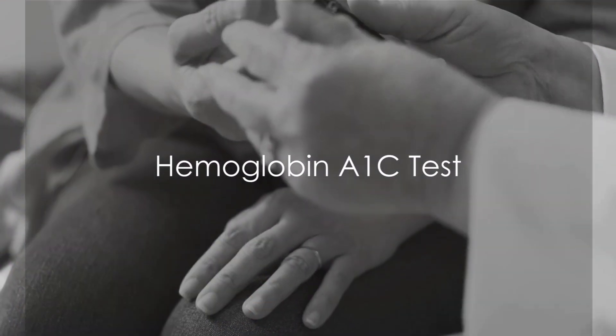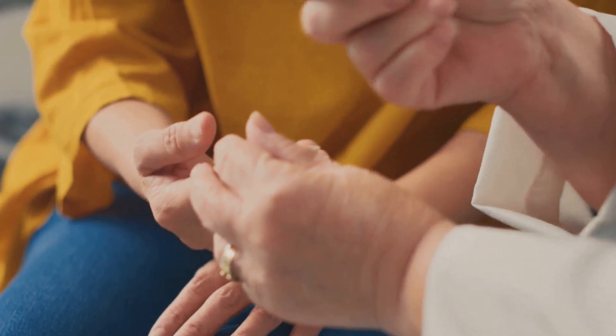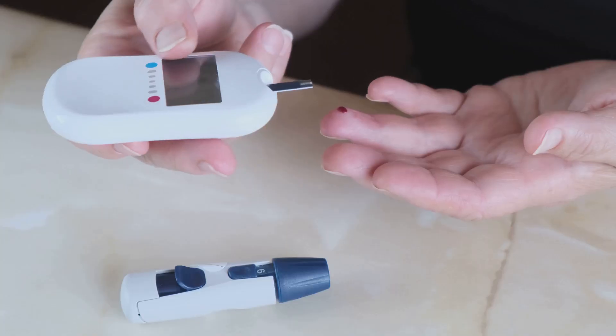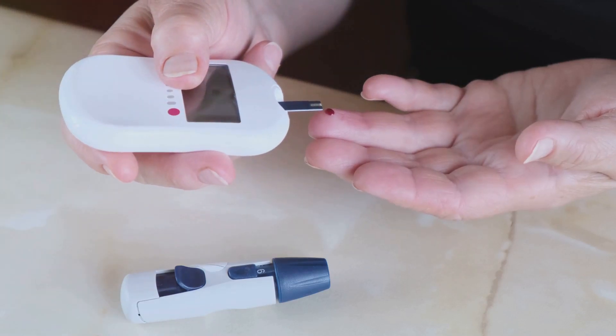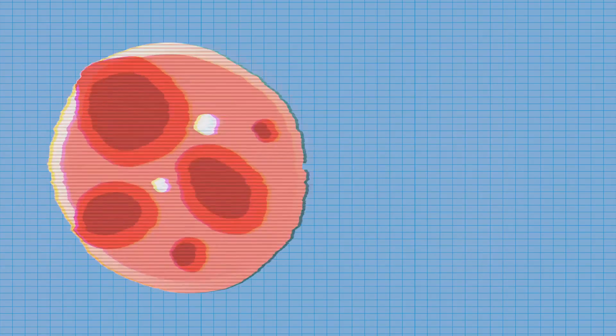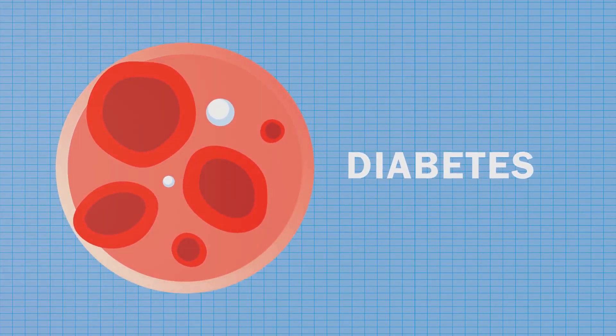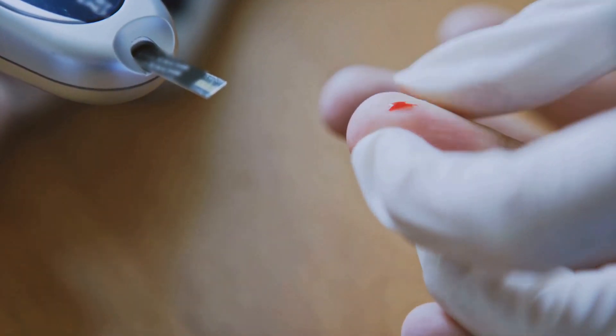Next, let's explore the hemoglobin A1c test. This test, also known as HbA1c, provides an average of your blood sugar levels over the past two to three months. It's a valuable tool in assessing how well you're managing your blood sugar over time, rather than just at a single point. You see, hemoglobin, the protein in your red blood cells that carries oxygen, gets sugar stuck to it. The more sugar in your blood, the more gets stuck. This test measures that sugar-coated hemoglobin.